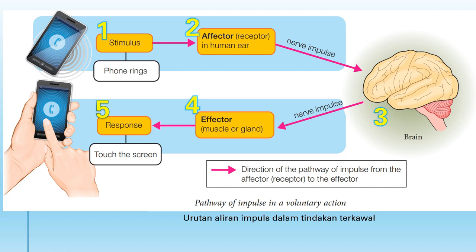This nerve impulse is sent to the brain — the central processing unit, like the CPU of a computer. The brain receives the message and decides what to do: maybe pick up the phone or ignore it. The brain sends a nerve impulse out to the muscles in your hand. If you want to pick it up, the muscle must contract so you can move your hand to pick up the phone.